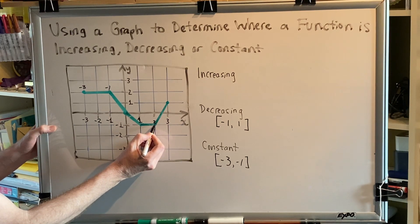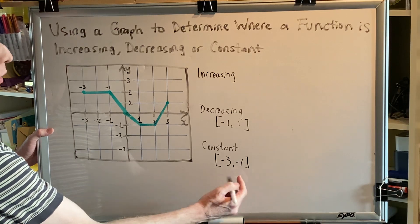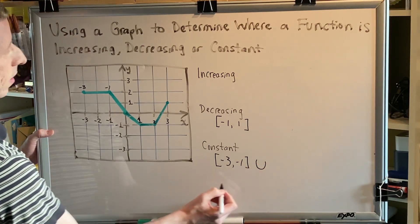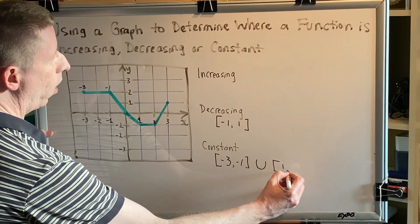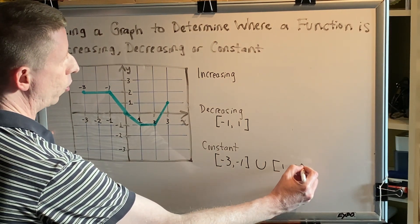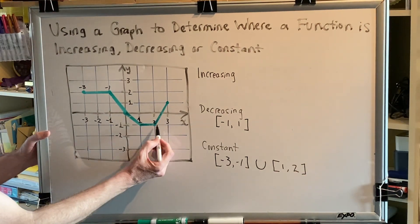So we are now going to have a second interval where we are constant, and therefore we need to use the union symbol, joining with our new interval one comma two, and again brackets on both sides.